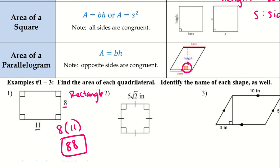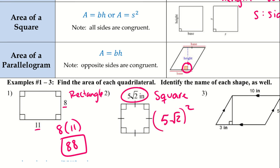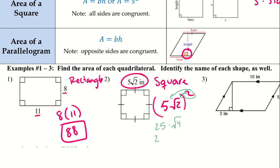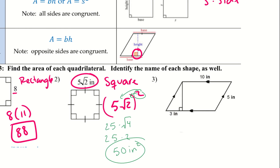For number 2, this is a square — it has right angles and all sides are congruent. We use S², where the side length is 5√2. Squaring distributes to both the 5 and the √2, so we get 25 times √4, which equals 25 times 2. The area of the square is 50 square inches.